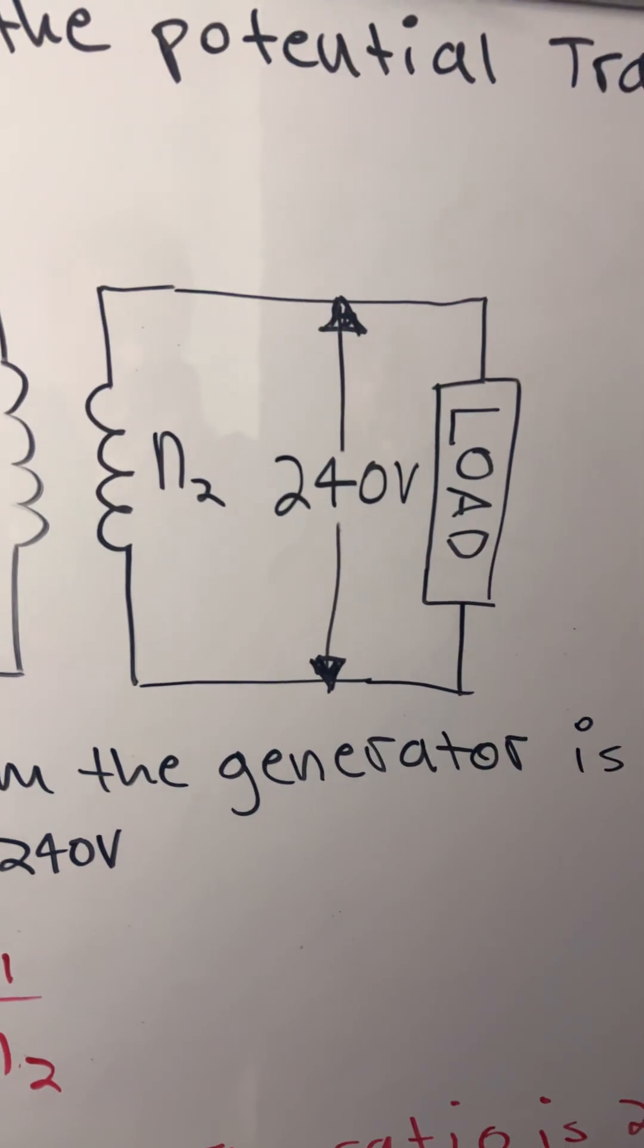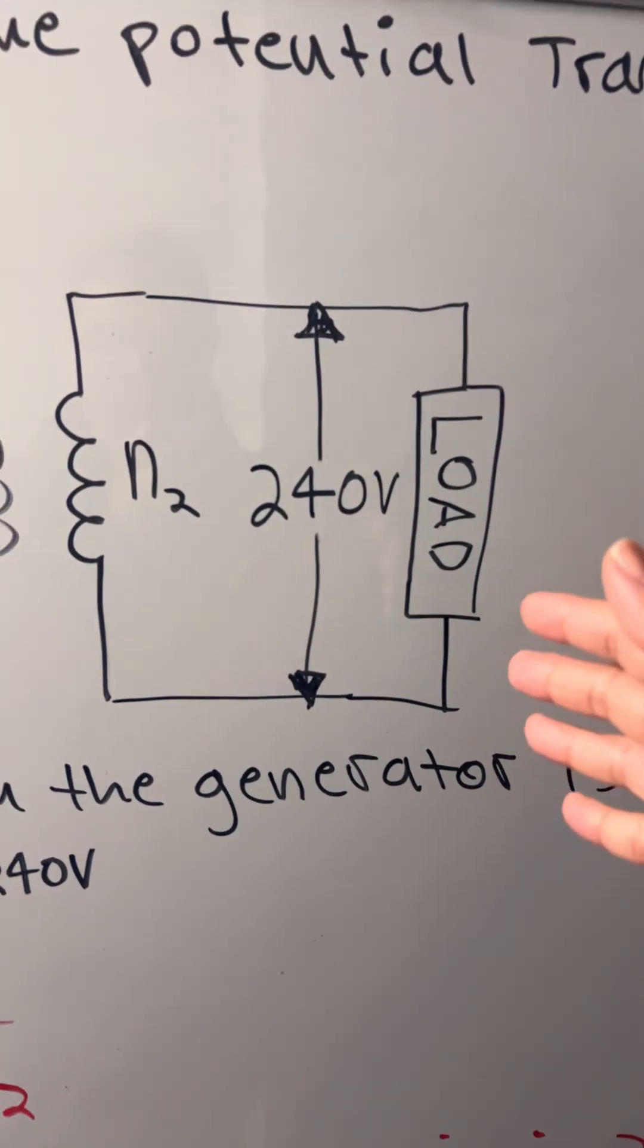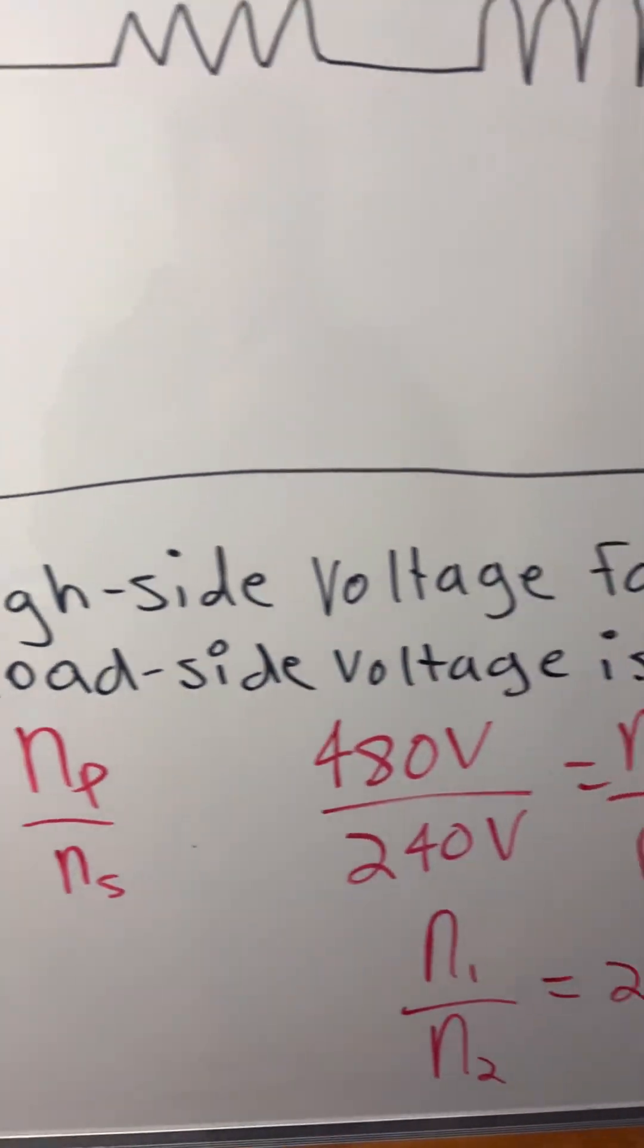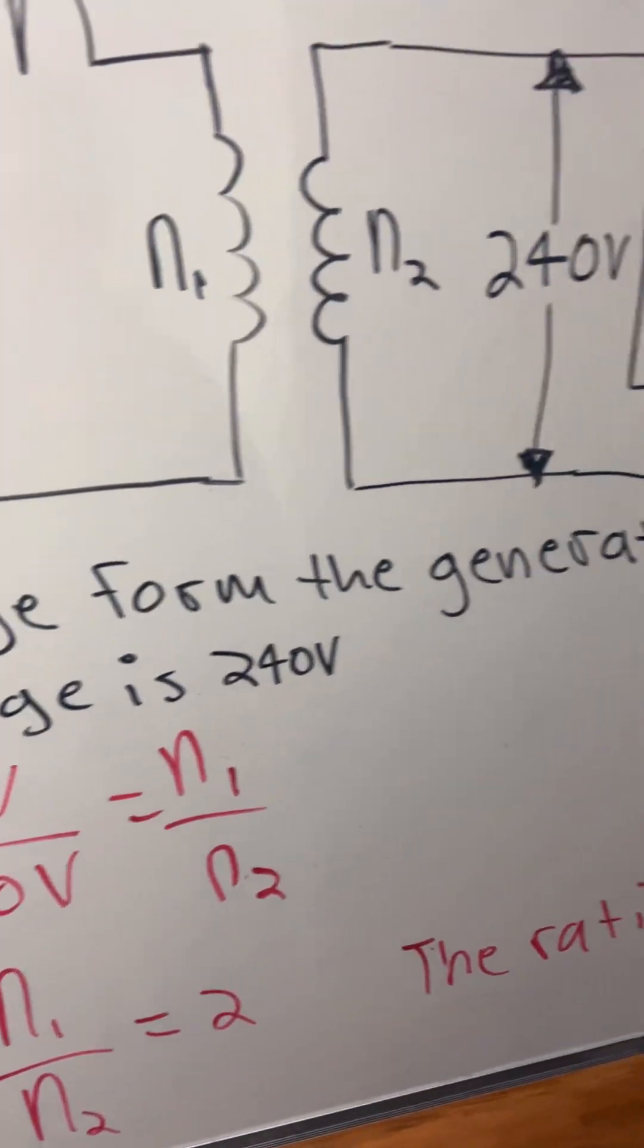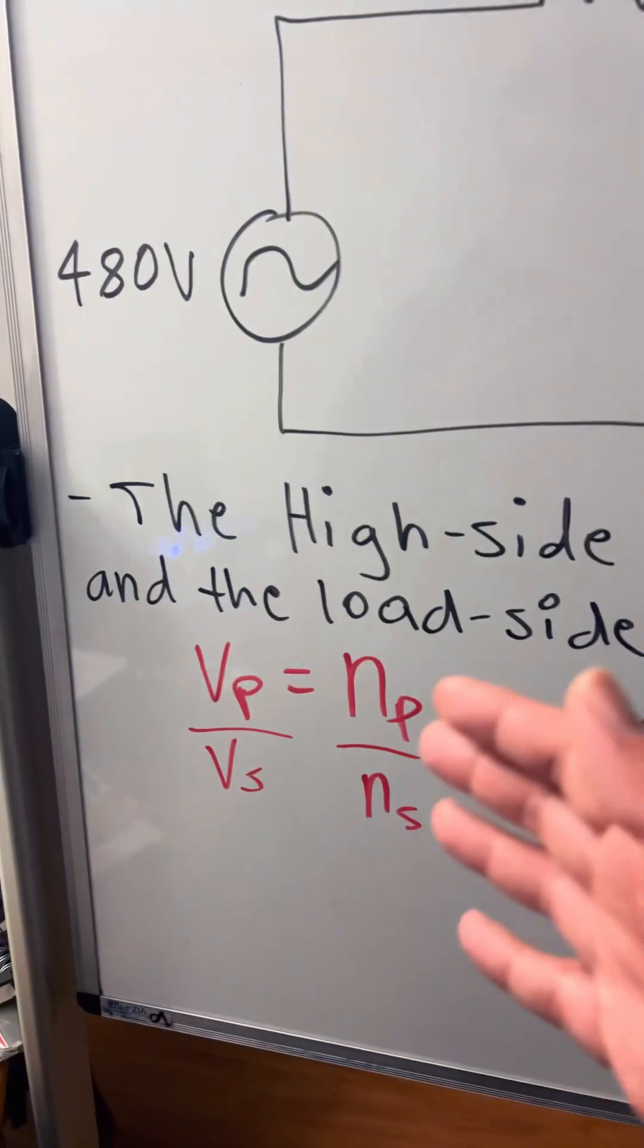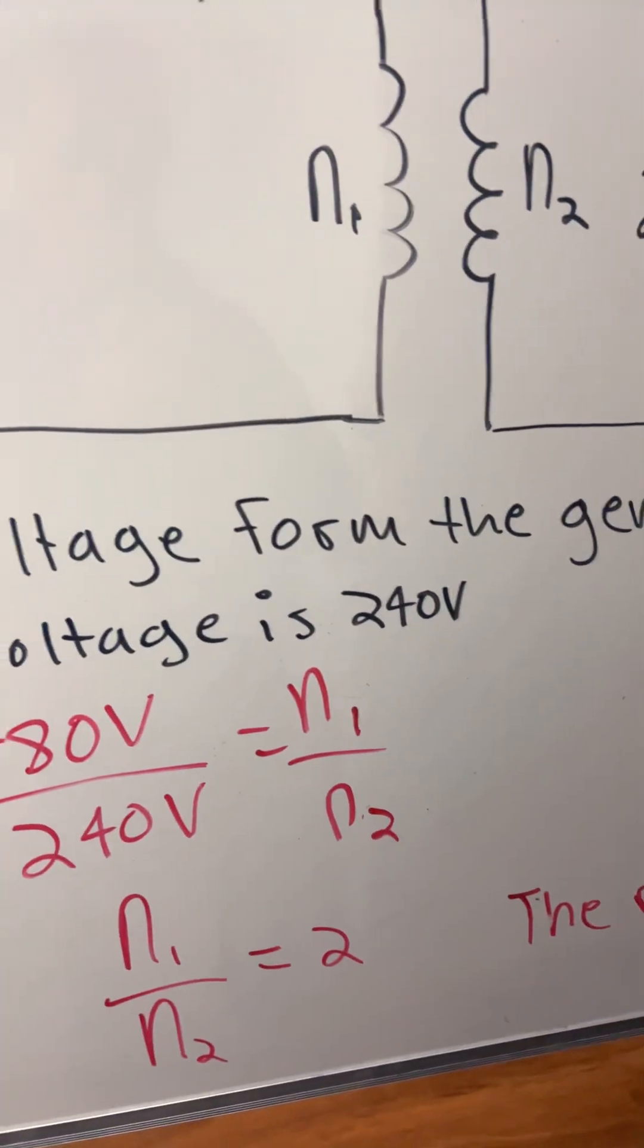We have 240 volts on the load side. The high-side voltage from the generator is 480 volts and the load-side voltage is 240 volts.